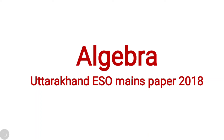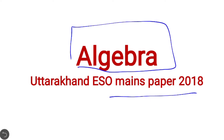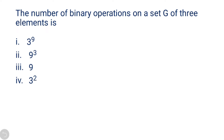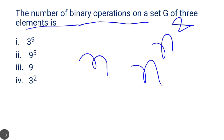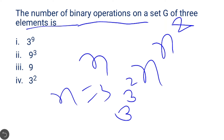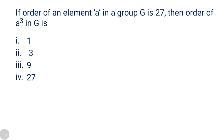Let's solve some problems based on algebra from the ISRO paper 2018. The first question is: the number of binary operations on a set G of three elements. As we know, the number of binary operations when the number of elements are n is n to the power n squared. Here n equals 3, so the number of binary operations will be 3 to the power 9. The answer is option A.